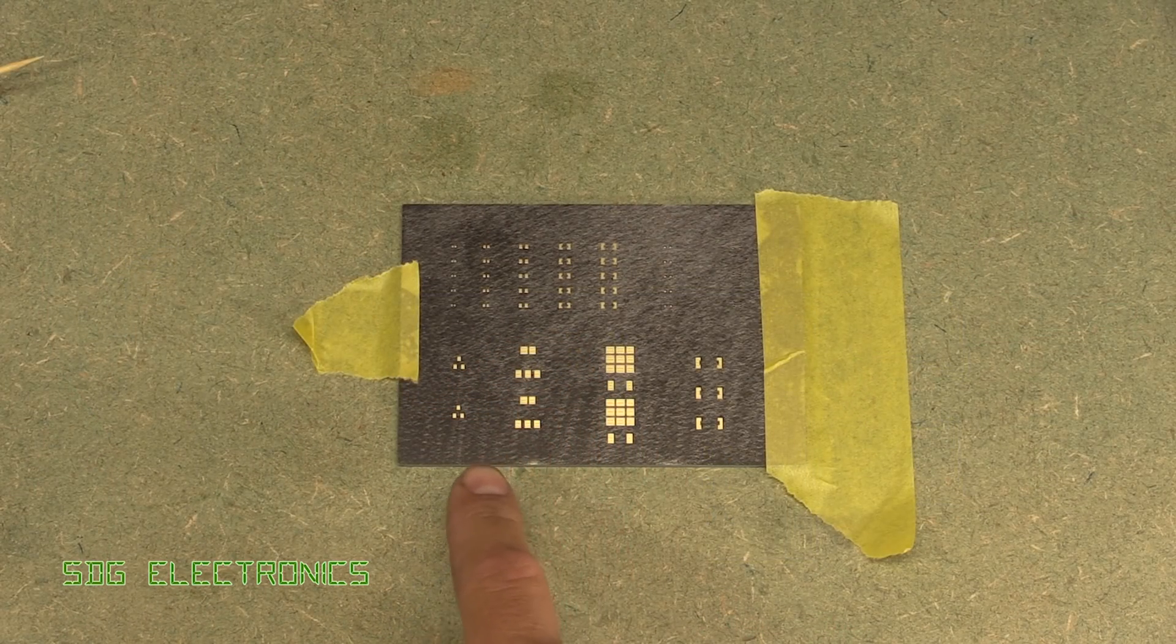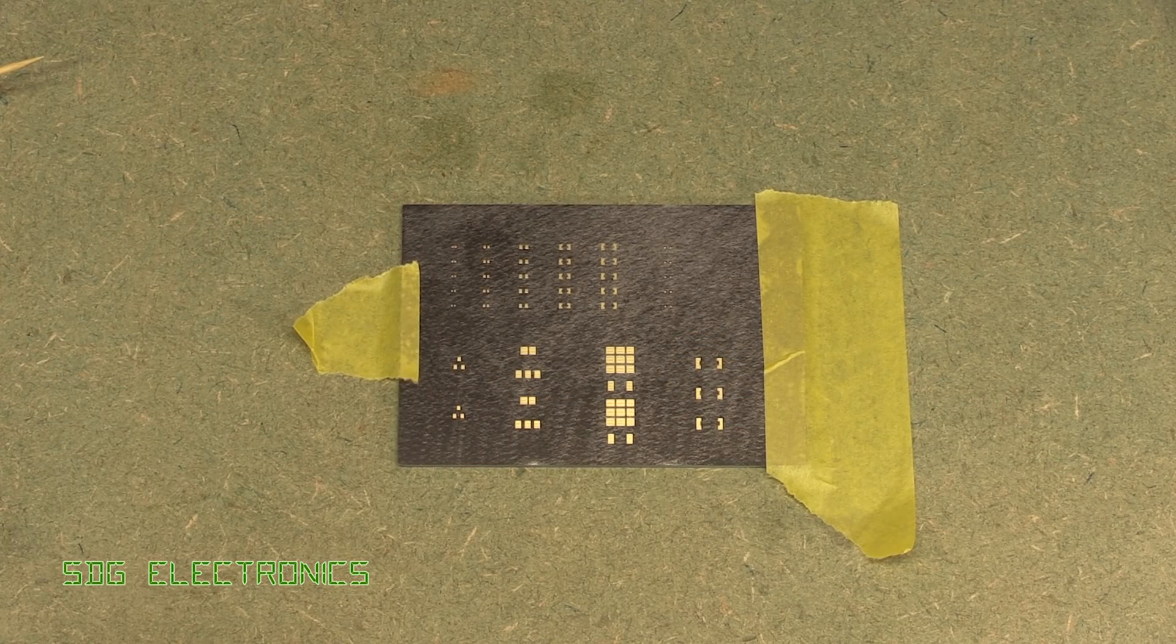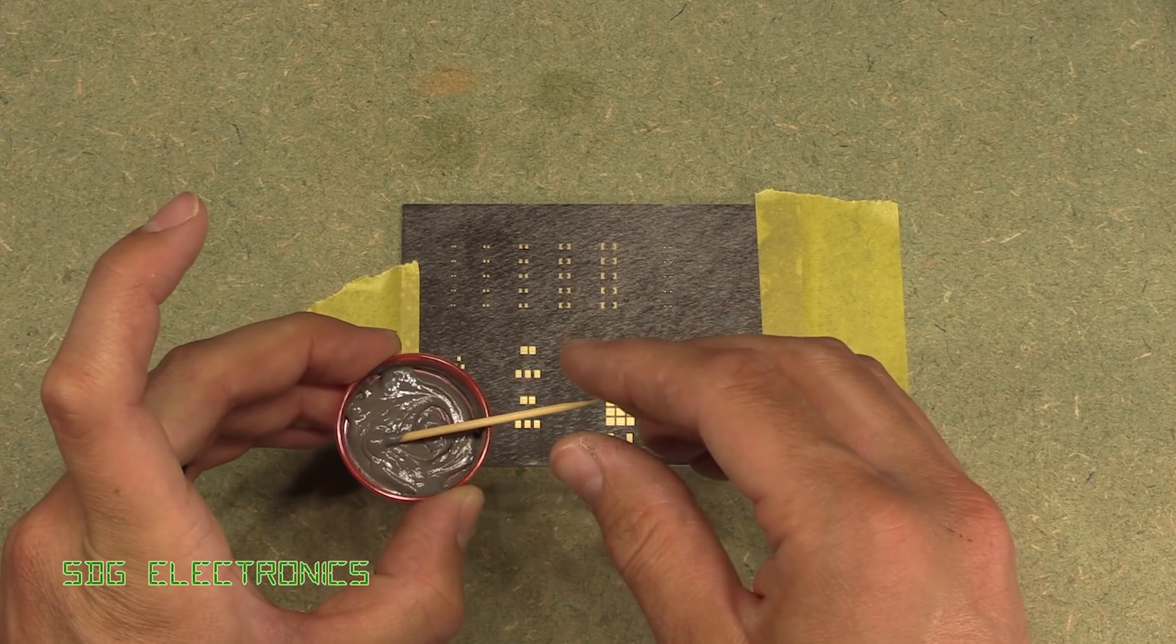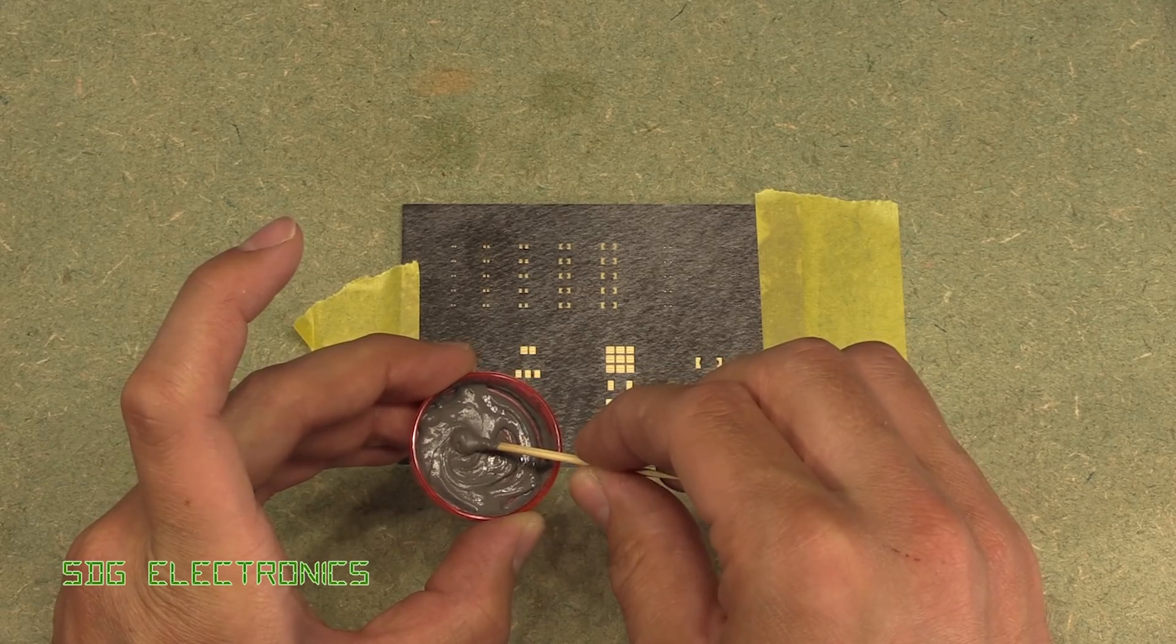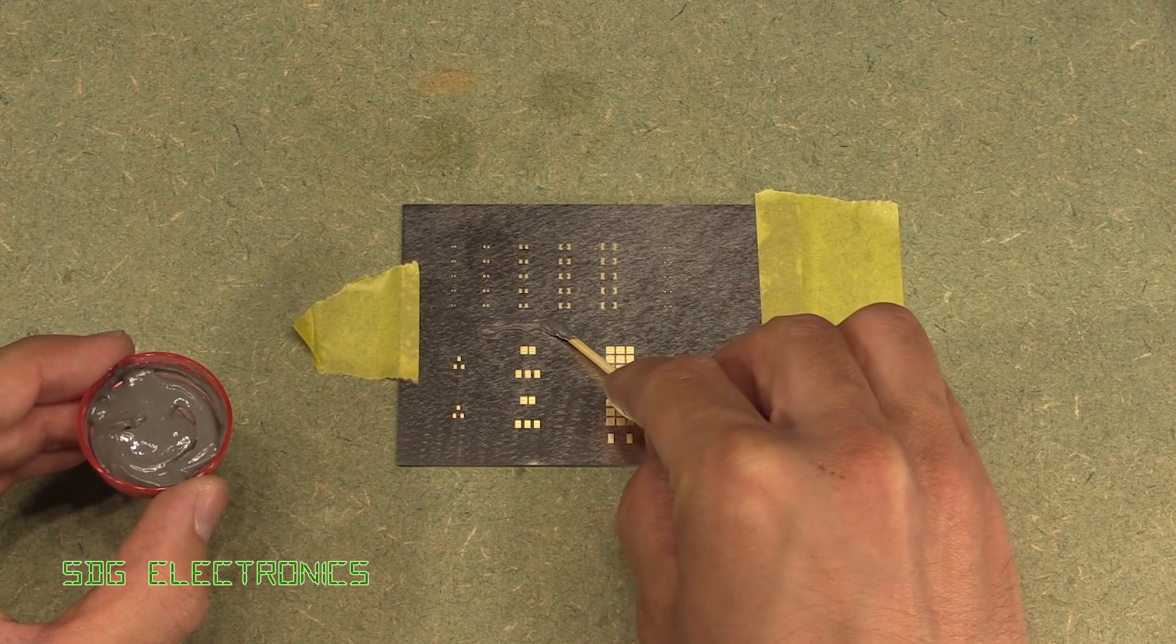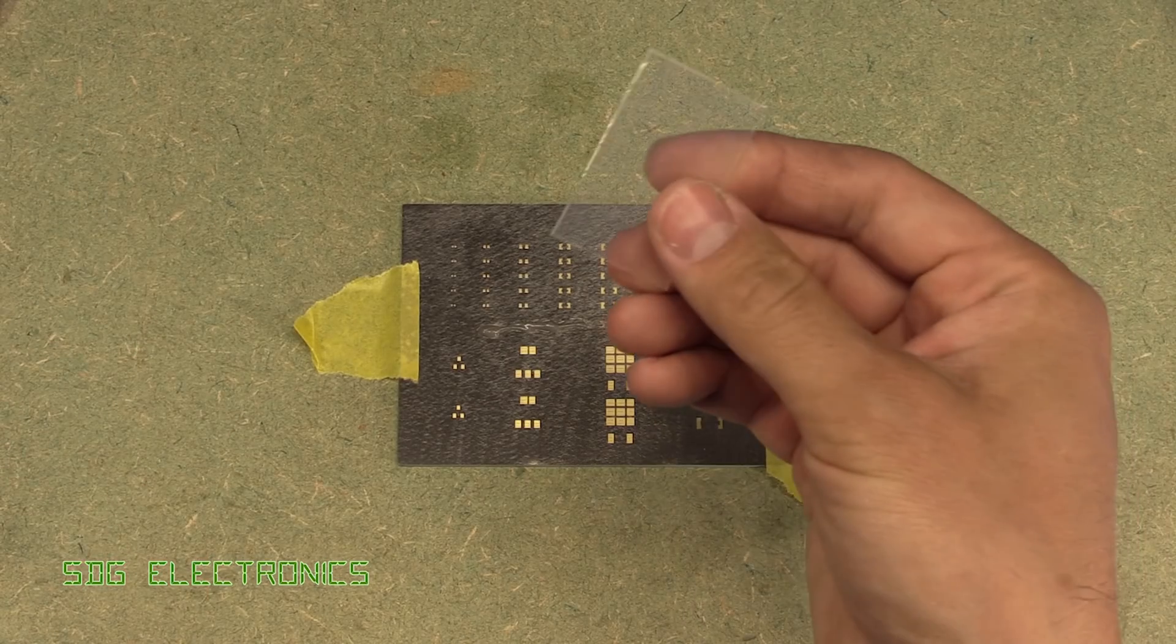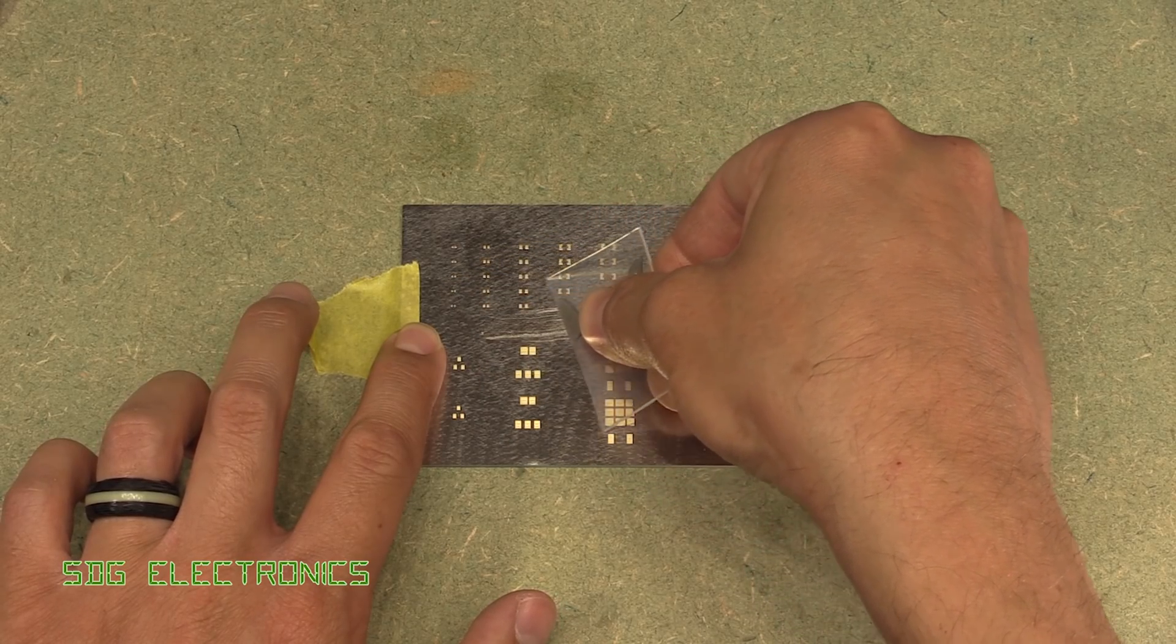That's the stencil pretty much in place. It's only loosely held down just to stop it moving around too much. Then we want to get our solder paste - this is the solder paste that I just reactivated in my previous video. We just want to put a bit on the board and then get yourself something to spread the paste around with and just lightly go over the pads.